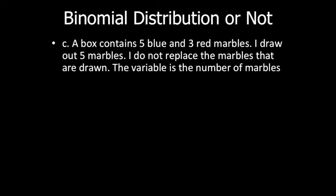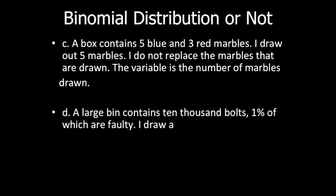Next example: A box contains five blue and three red marbles. I draw out five marbles but do not replace the marbles that are drawn. The variable is the number of red marbles drawn. Because there is no replacement, the probability of each draw is dependent upon the result of the previous draw, so this is not a binomial distribution.